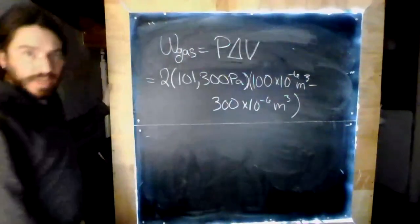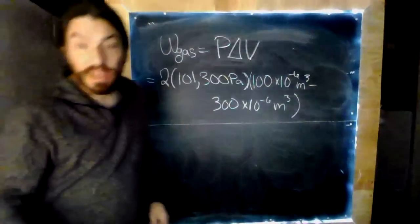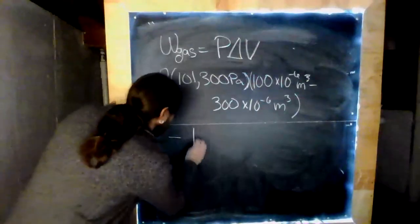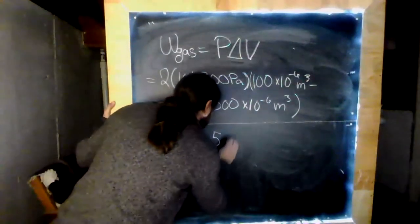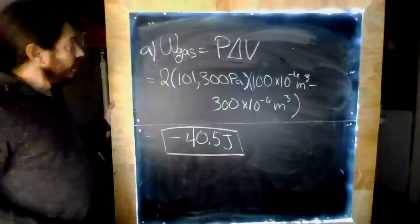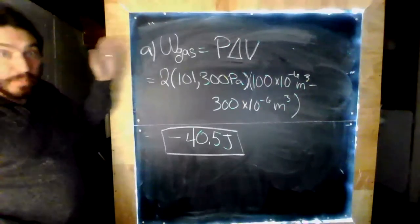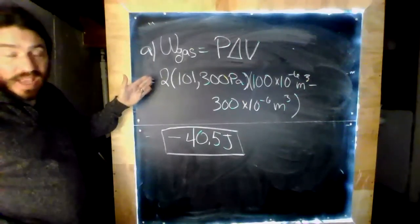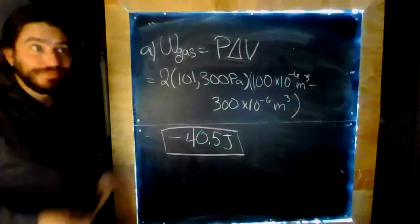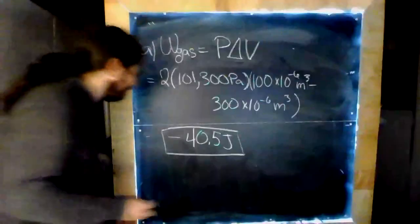And I'll just do a new line here. Okay. So, there we go. And I run my calculator. Let's see what I get. Negative 40.5 joules. Okay. So, that is the work done by the gas. How much work is done on the gas? Well, it's just the opposite.